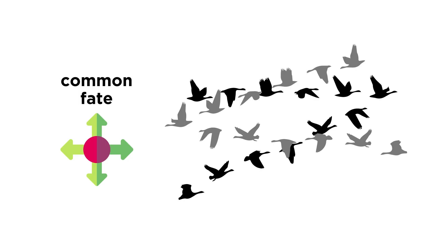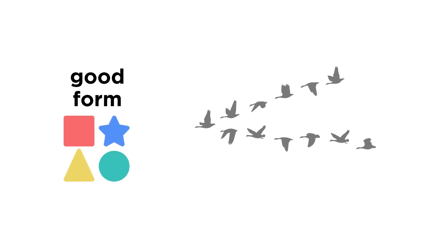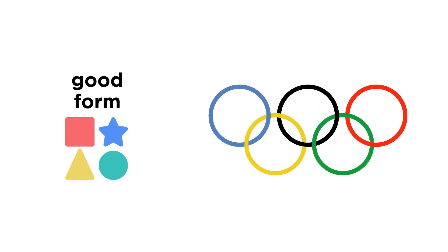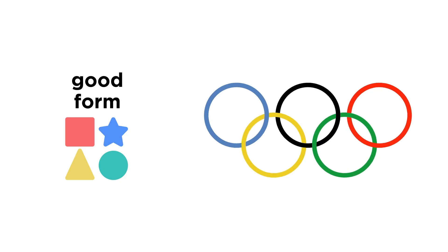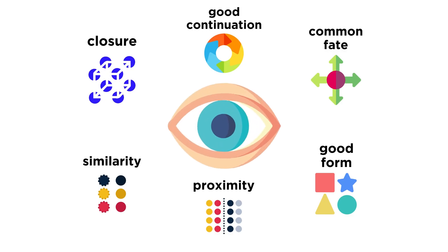And the final principle we use in visual perception is the principle of good form. This is our tendency to perceive objects in the simplest way possible. Think of the Olympic symbol. We see it as overlapping circles instead of a bunch of curved connected lines. The principles of grouping represent just one of the many ways our minds take visual information to create a mental picture of the world.